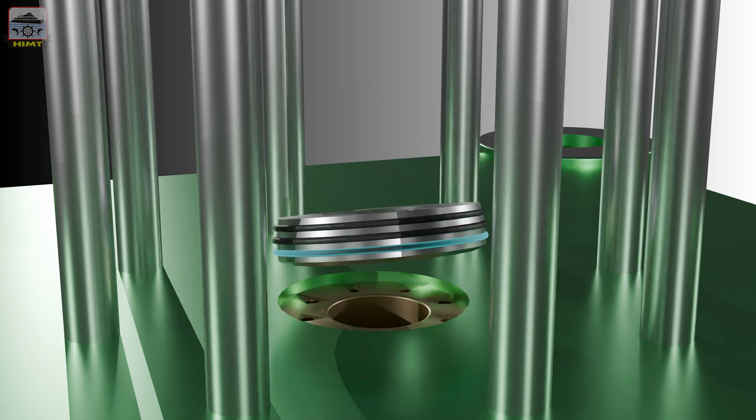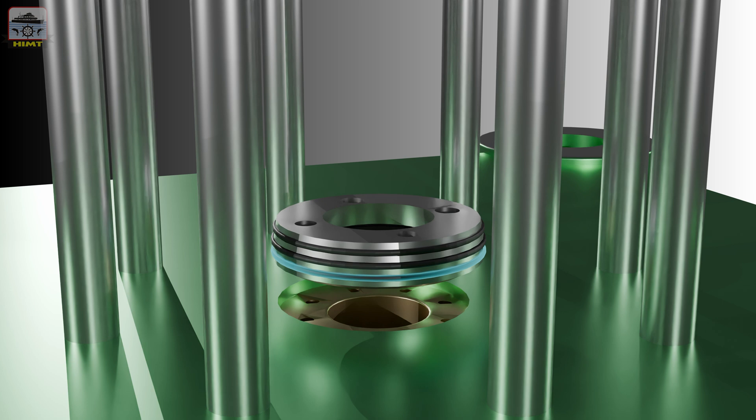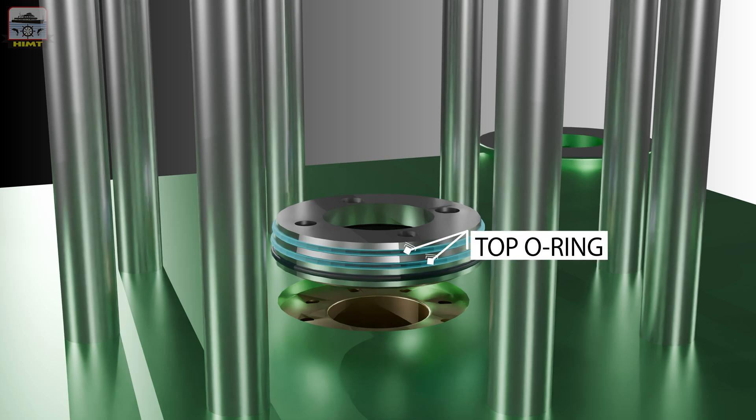The air seal also has three o-rings. The bottommost o-ring provides a sealing surface with the valve housing and the top two o-rings provide the sealing surface with the air cylinder.